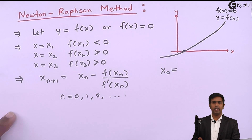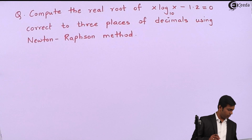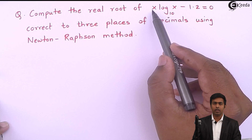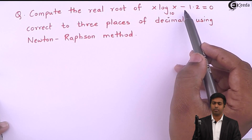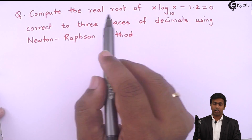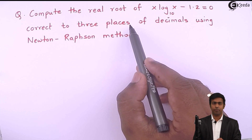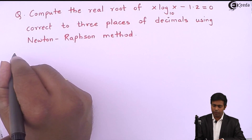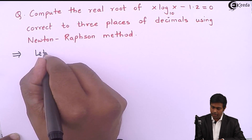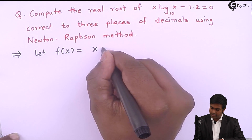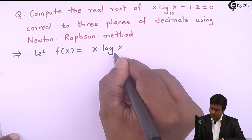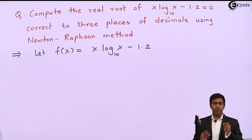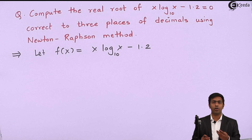To understand this method, let us take one example. We have to compute the real root of the equation x log x (base 10) minus 1.2 equals 0, correct up to three decimal places, using Newton-Raphson method. So here we will say: let f of x equal to x log x (base 10) minus 1.2.